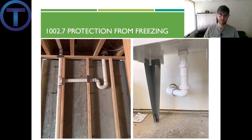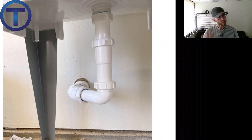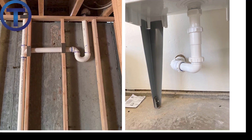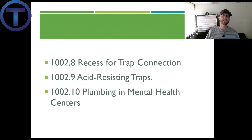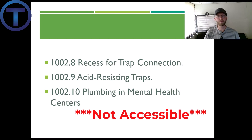When it comes to protection, we think about protection from freezing. There's a case where there is no trap involved — intentional, because this is in space that would freeze. Back behind the wall in the house where it will not freeze is where we find the trap. As long as that standpipe does not exceed 24 inches in height and doesn't travel more than 30 inches horizontally, we can do a sink like this. In a garage that may freeze if left open, this gives us an option for a sink. Section 1002.8 gives us information about a recess for trap connections. Section 1002.9 talks about acid resistant traps, and Section 1002.10 talks about plumbing in mental health centers, specifying that it should not be accessible — plumbed in such a way that people in those institutions cannot take the trap apart and use it to hurt themselves or someone else.